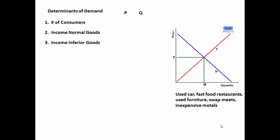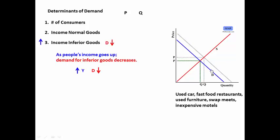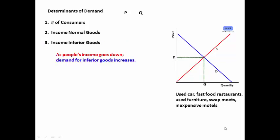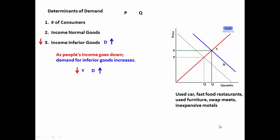Income — inferior goods. As people's incomes go up, the demand for inferior goods decreases. As people's incomes go down, demand for inferior goods increases, driving the curve to shift to the right, driving the price of inferior goods up and the quantity of inferior goods up.